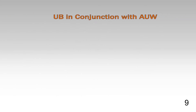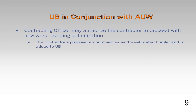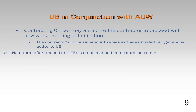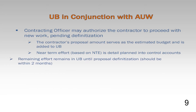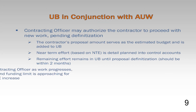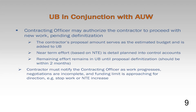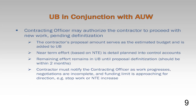Another situation involving UB is to accommodate Authorized Unpriced Work, or AUW, which is the estimated cost excluding fee or profit for contract changes that have been approved by the government contracting officer but have not yet been fully negotiated. A portion of the budget associated with the not-yet-negotiated work is distributed to the control account managers to begin work on the near-term effort. The remainder of the contractor's proposed budget is put in the undistributed budget. This is necessary to ensure the full scope of the proposal is identified in the PMB. Recall the PMB represents all authorized project scope, even if not yet definitized.